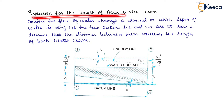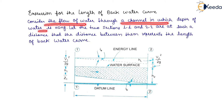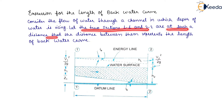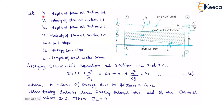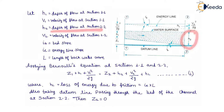Now, the expression for the length of backwater curve. Consider the flow of water through a channel in which depth of water is rising. Let two sections 1-1 and 2-2 be at such a distance that the distance between them represents the length of backwater curve. Let H1 be the depth of flow at section 1-1, V1 be the velocity of flow at section 1-1, H2 be the depth of flow at section 2-2, V2 be the velocity of flow at section 2-2. IB is the bed slope, IE is the energy line slope, and L is the length of backwater curve.